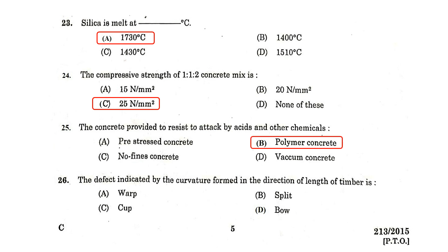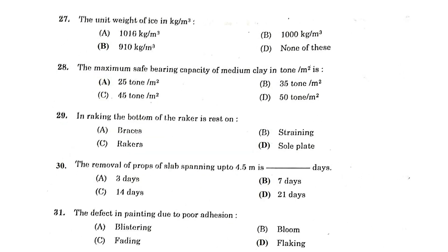The defect indicated by the curvature formed in the direction of length of the timber is bow. The unit weight of ice is 910 kg per m³. The maximum safe bearing capacity of medium clay is 25 ton per meter square.